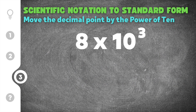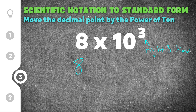Finally, our last problem is number 3, which gives us 8 times 10 to the third power. Our base is 8, so I'll write 8. The 3 moves the decimal point to the right three times. Anytime you have a whole number without a decimal point, the decimal always goes right behind the number.